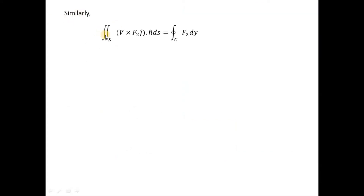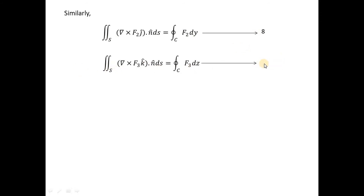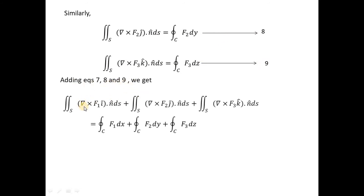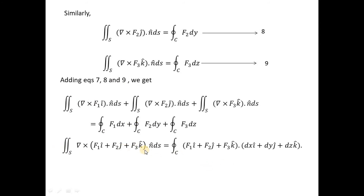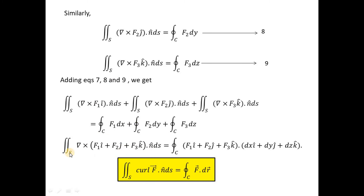Similarly, we derive Equation 8 for the second term involving F2, and Equation 9 for the third term involving F3. Adding Equations 7, 8, and 9 gives us the combined expression, which simplifies to show that the surface integral of curl F equals the line integral of F along closed curve C. Hence we have proved Stokes' theorem. Thank you.